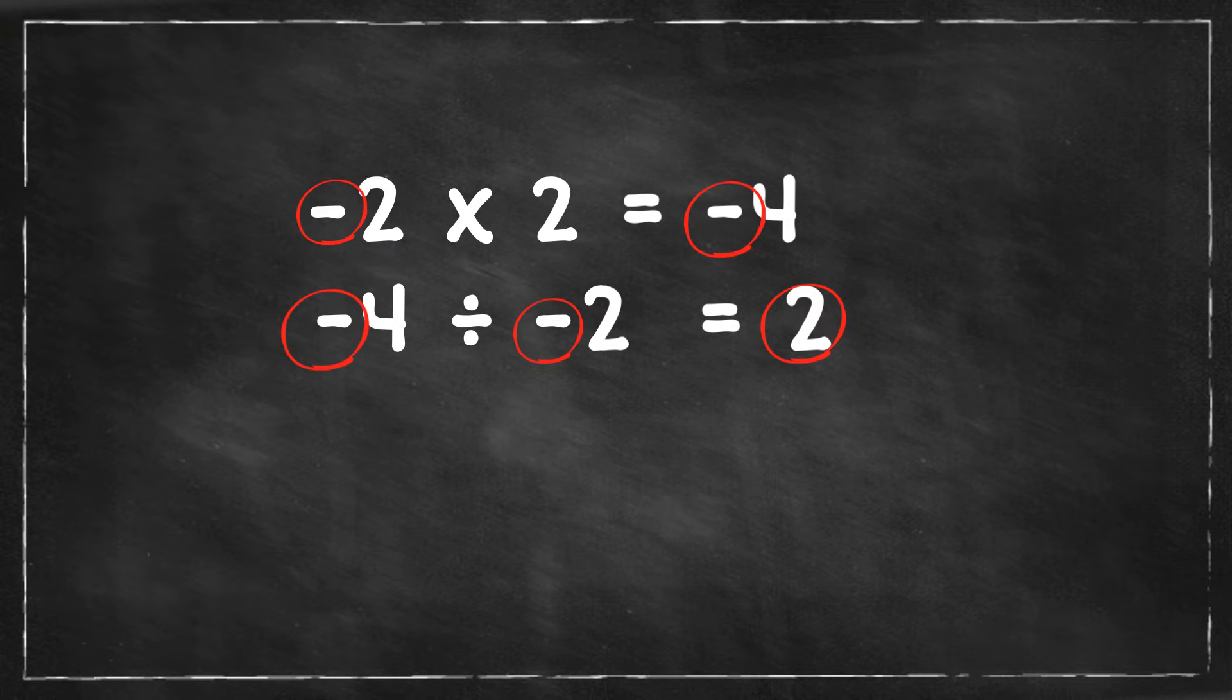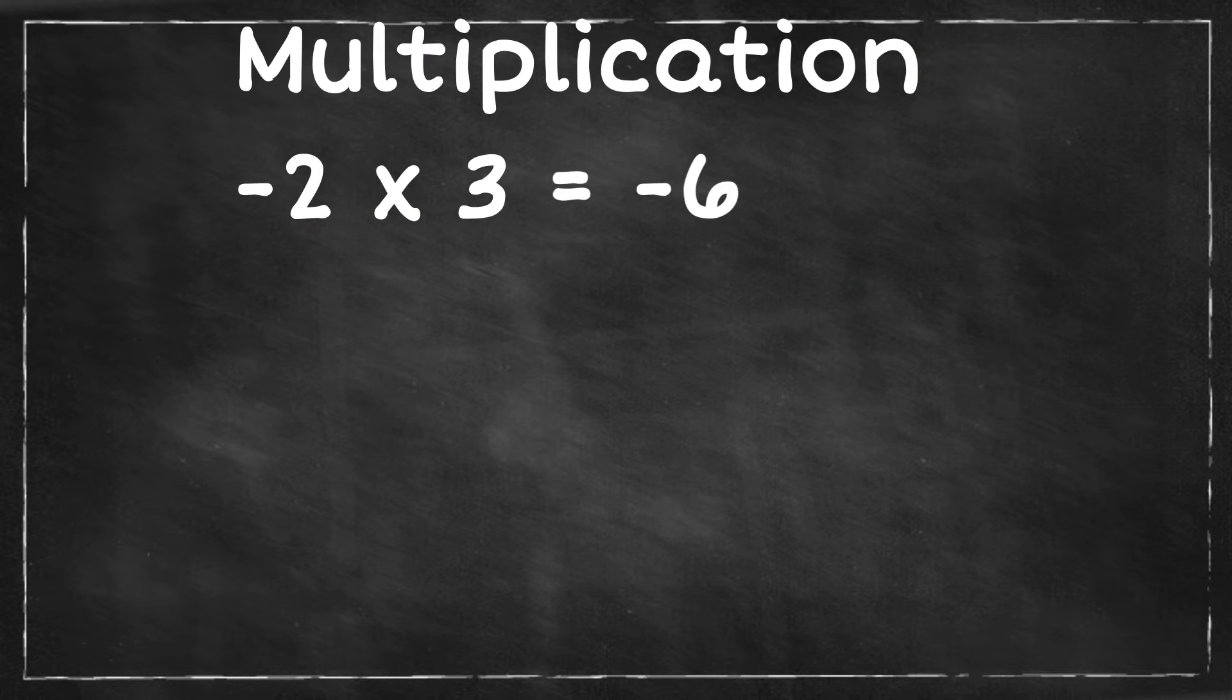Let's look at a couple other examples. Negative 2 times 3. You have one negative number, so the answer is negative 6.